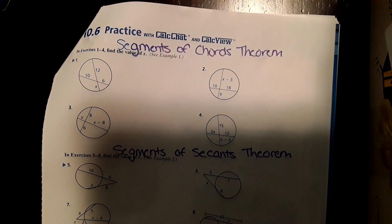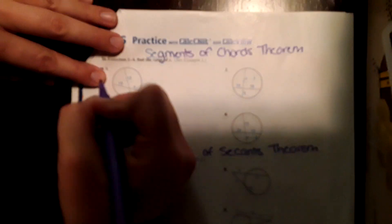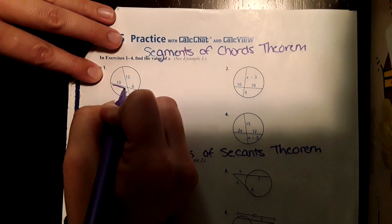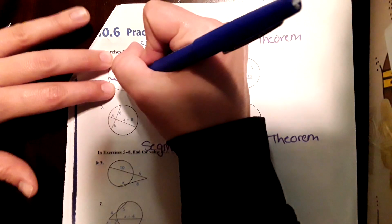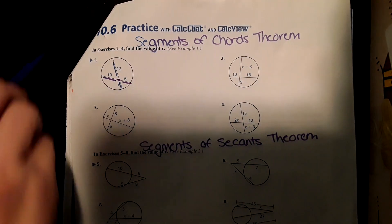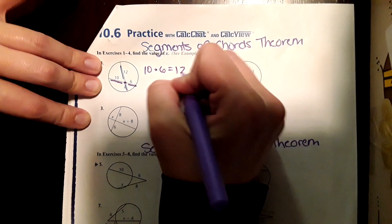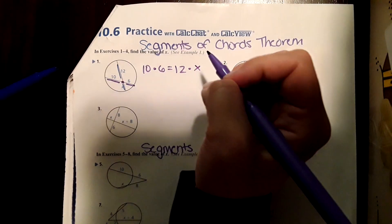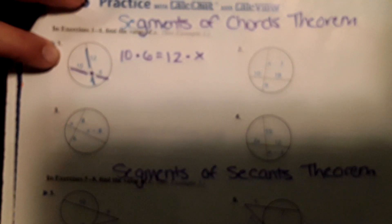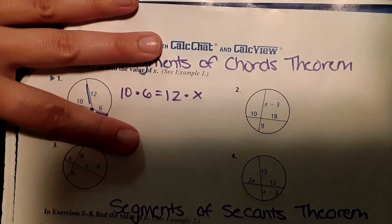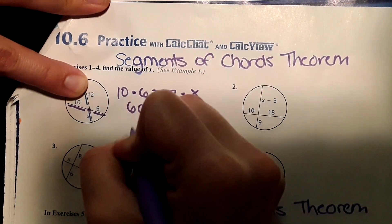Segments of chords theorem. For this one, I'm just going to show you what to do. You're going to take this part of the segment and multiply it by this part, and then take this part and multiply it by this part. So it'll look like this: 10 times 6 equals 12 times X. We get 60 equals 12X, and then X equals 5.